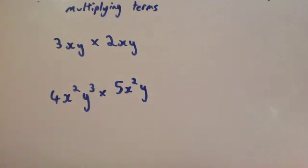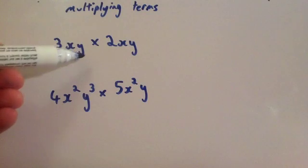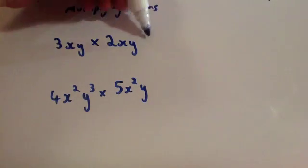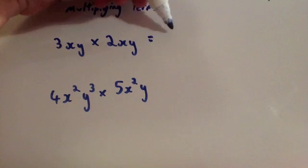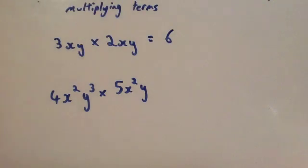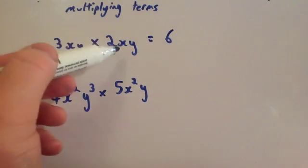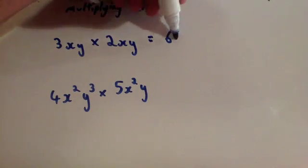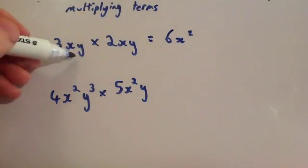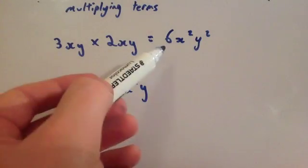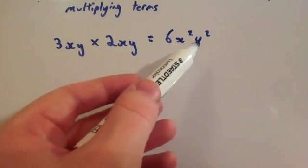We'll finish off with two last examples. If you had 3xy times 2xy, multiply the numbers in front: 3 times 2 is 6. Then multiply the x's together: x times x is x squared. And y times y is y squared. So the answer would be 6x squared y squared.